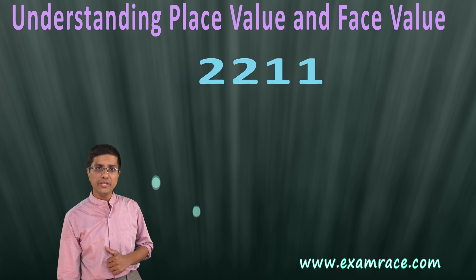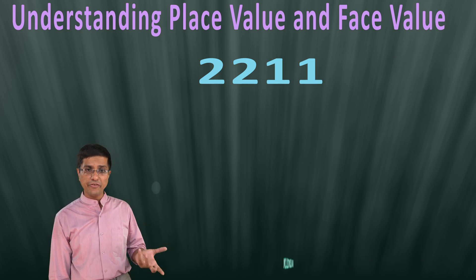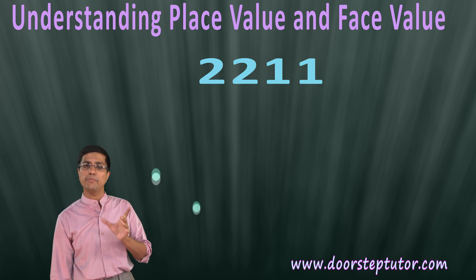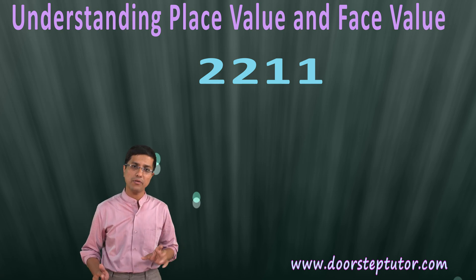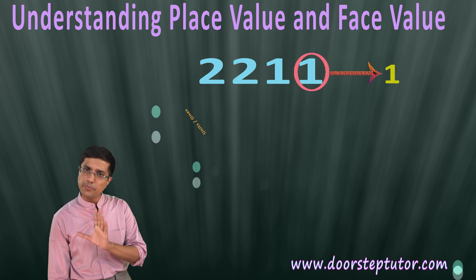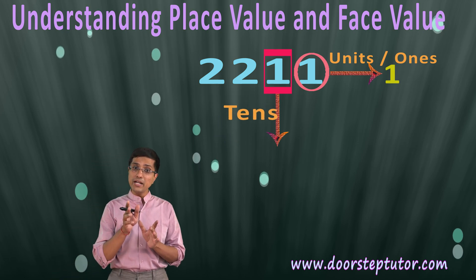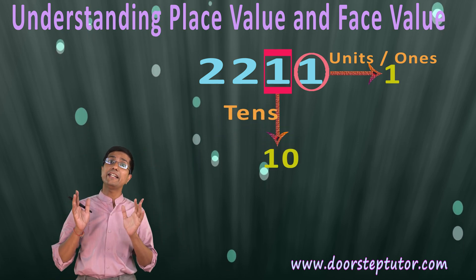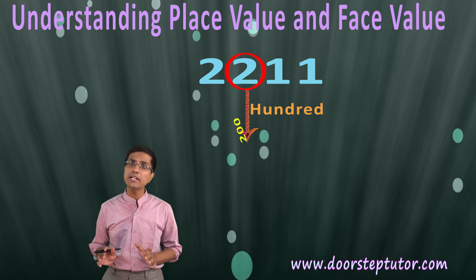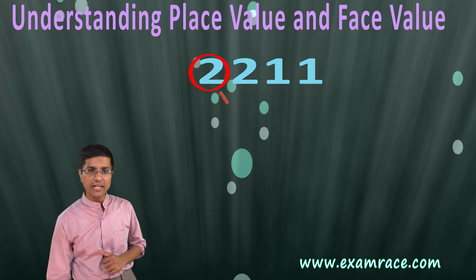Let's find the place value and face value of numbers. The face value is just the value by looking at the face of the number — don't take the position into account at all. Then we look at the place value. This one is simply one itself — it is in the units position. This one is in the tens position, so it may look like a simple one, but it is indeed ten. This two is in the hundreds position, so it is really two hundred. And similarly, this two is two thousand.